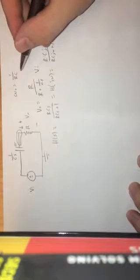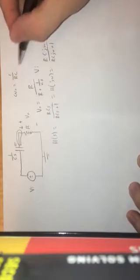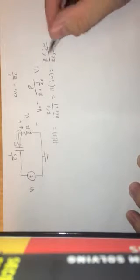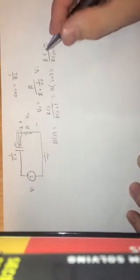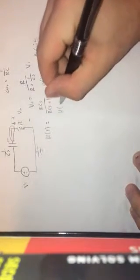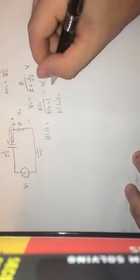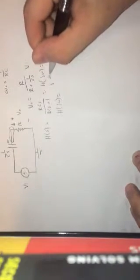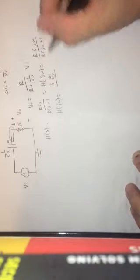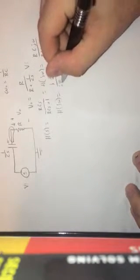Now using this, omega naught is equal to 1 over RC, and substituting that in for where we see RC. We now get H of J omega is equal to J omega over omega naught divided by J omega over omega naught plus 1.